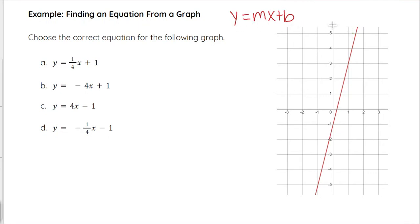If we have y equals mx plus b and we're given this equation, we can write the equation of the line and see if it matches one of these four over here. So y equals mx plus b, remember our m is our slope and our b is our y-intercept. So I'm going to start by figuring out what m and b are.